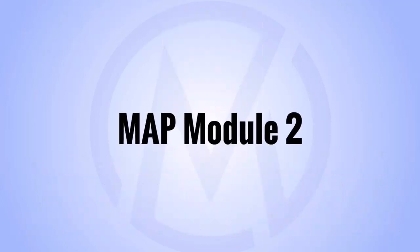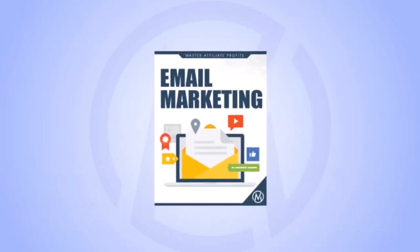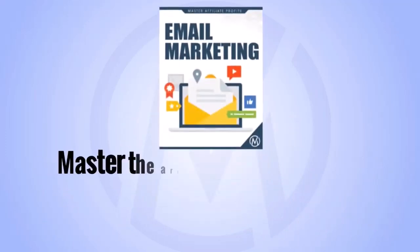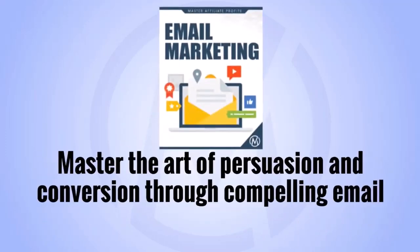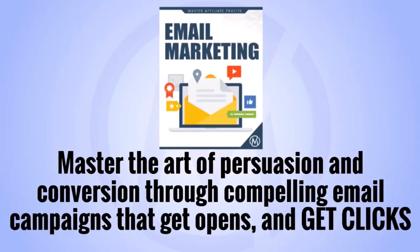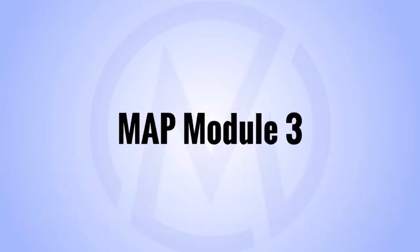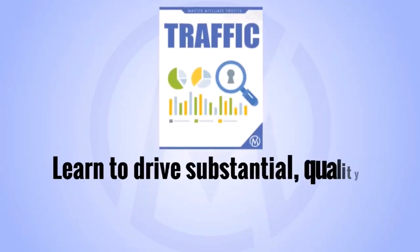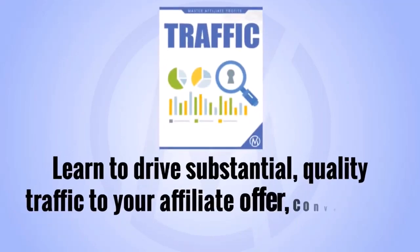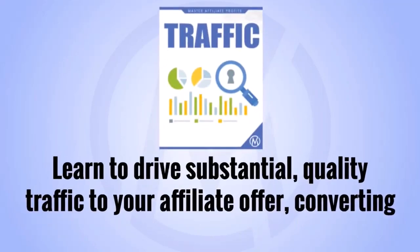MAP Module 2: Email Marketing — master the art of persuasion and conversion through compelling email campaigns that get opens and get clicks. MAP Module 3: Traffic — learn to drive substantial quality traffic to your affiliate offer, converting clicks into customers.